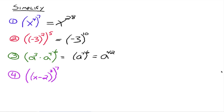What about number 4? The base for this exponent 3 is all of x minus 2. And the base for this 7 is x minus 2 cubed — all of that is the base for the 7. So we have an exponential expression raised to the seventh power, and we multiply the 3 and the 7 together to get 21. This goes to x minus 2 to the 21st power.